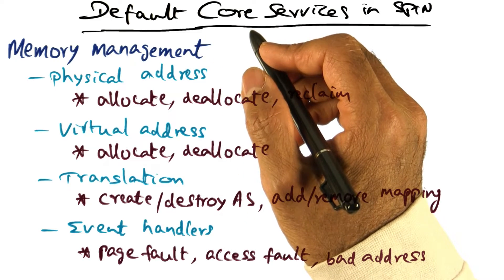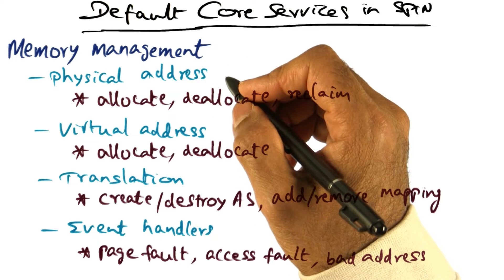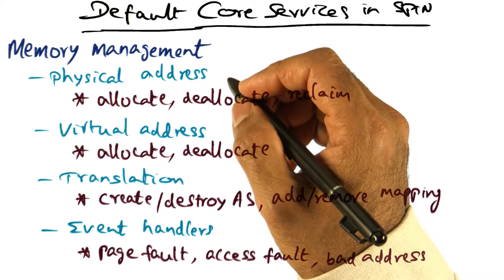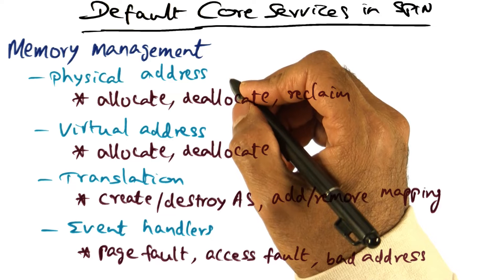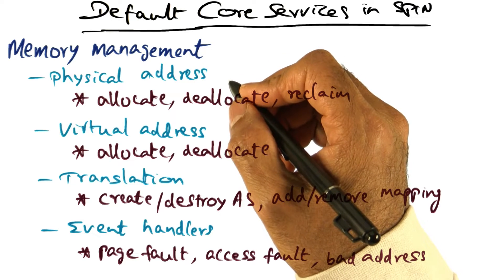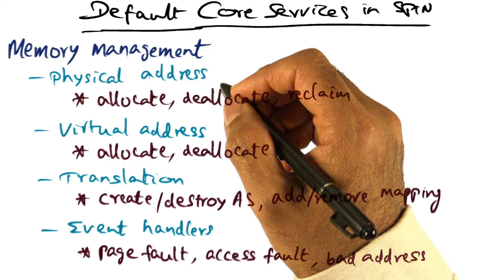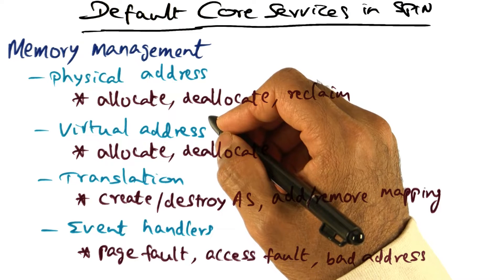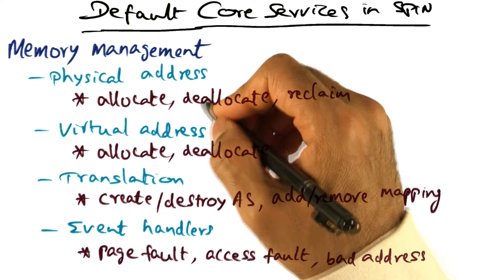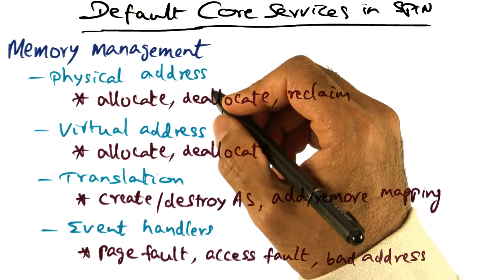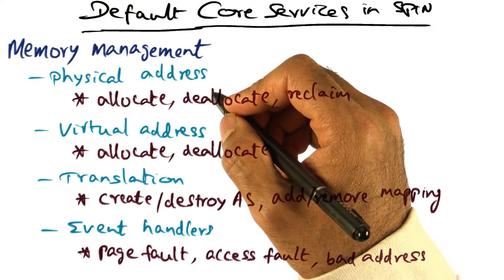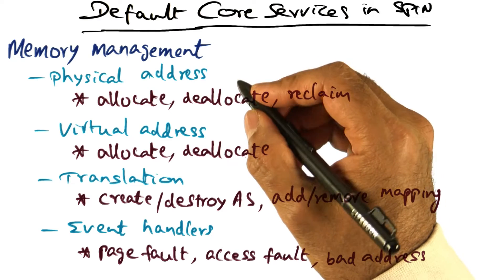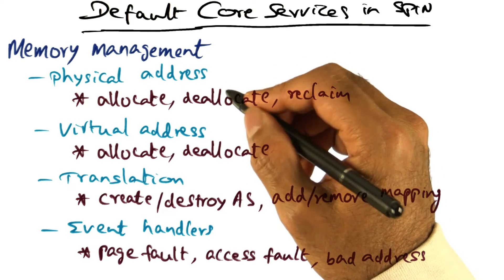Physical memory is a precious resource. We know that native operating systems, such as Linux or Windows, manage the physical memory that is available from the hardware. Spin wants to allow extensions to manage physical memory allocated to them in whatever fashion they choose to. The macro allocation of a bunch of physical memory to an extension is outside the scope of this discussion, but assume that allocation happens when an extension starts up. The discussion here has to do with the management of the pre-allocated physical memory by the extension.